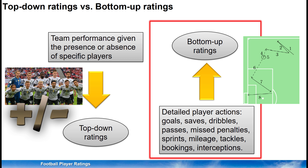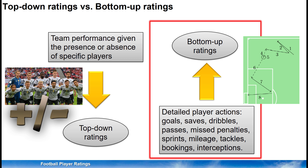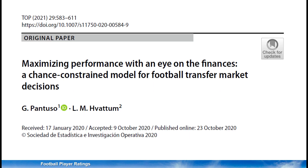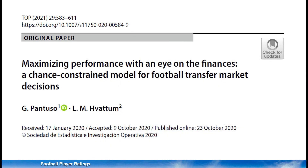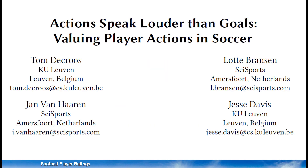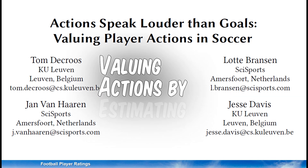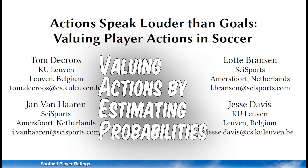As bottom-up ratings make use of more data, we should expect them to be more reliable and basically better at separating good players from bad players. In a paper published in 2021, Gary Gallade and yours truly studied a bottom-up rating and a top-down rating and tried to evaluate them in terms of their reliability and their validity. In particular, we examined a top-down rating based on the concept of plus-minus, and as a bottom-up rating we chose the VAEP rating — Valuing Actions by Estimating Probabilities — which was presented in 2019.